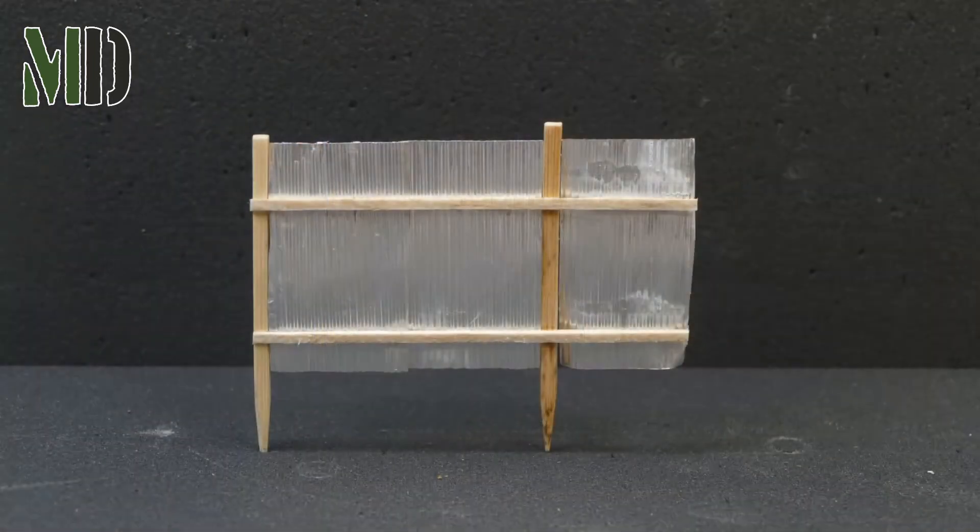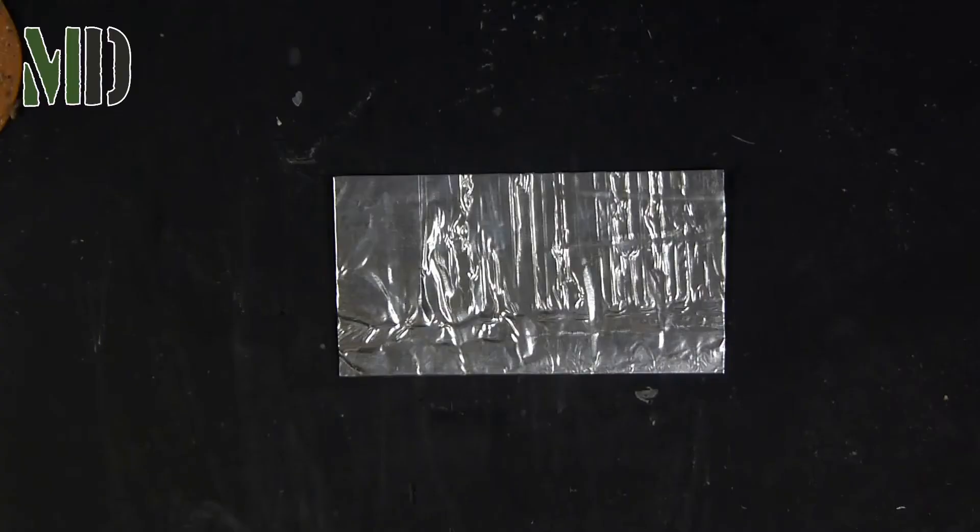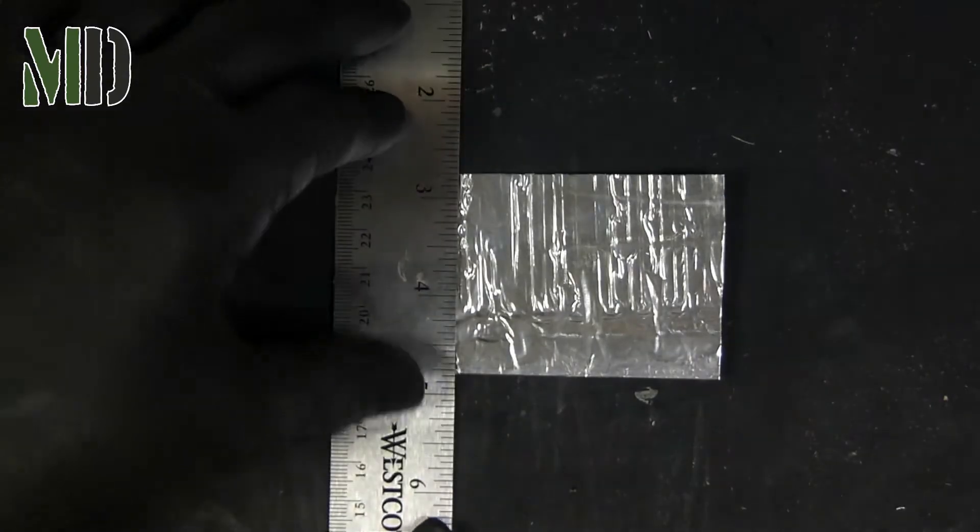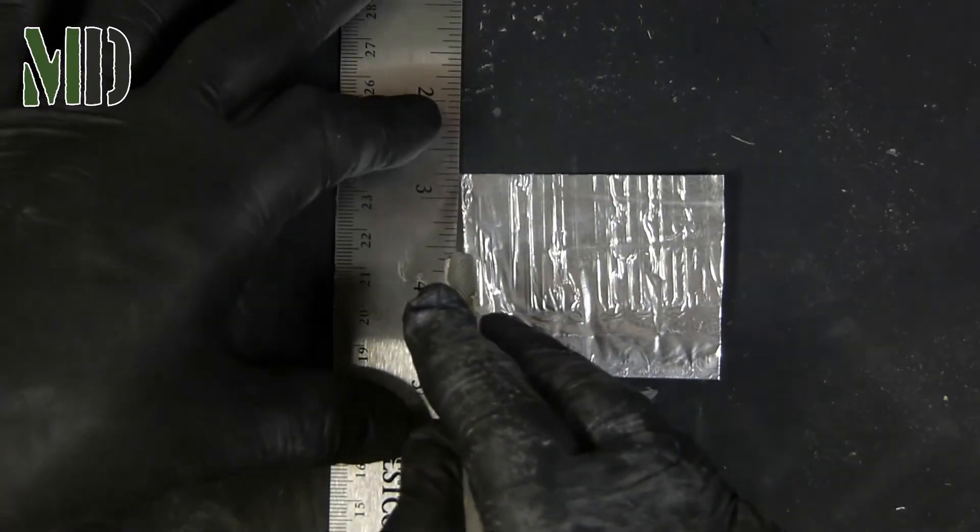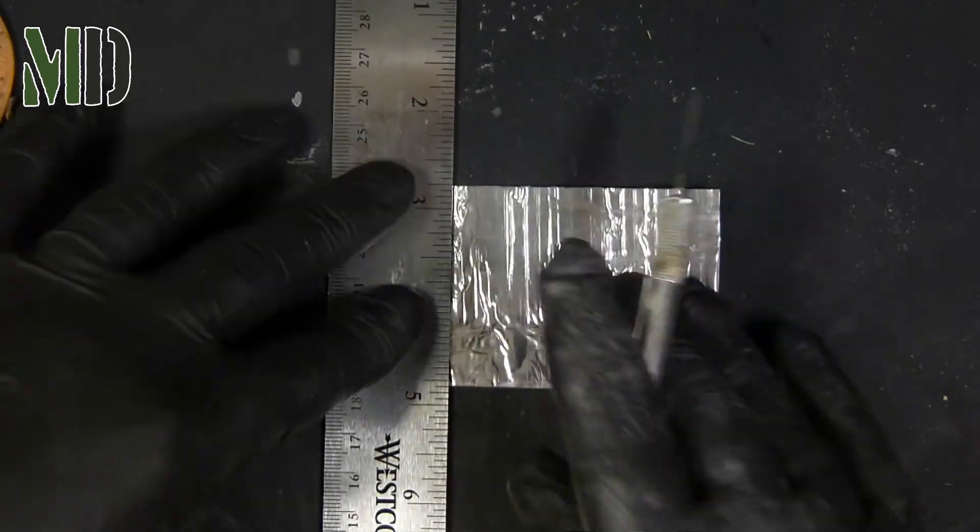The next fence I'll be doing will be a corrugated steel fence with wooden fence posts. I start off with a takeaway container, a foil takeaway container, and I smooth that out. I buy new ones from a packing store. I smooth that out so it's flat, then cut out a panel.